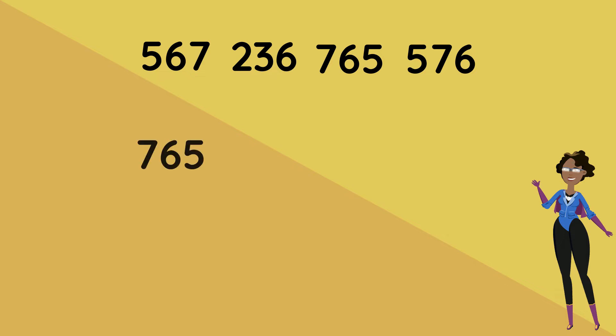For our next example, we have 567, 236, 765, and 576. Let's put them in sequence from largest to smallest. Our largest would be 765, then 576, followed by 567, and finally 236.